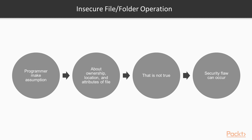Time synchronization protocols like NTP can be used to mitigate clock drift. In insecure file or folder operations, programmers often make assumptions about the ownership, location, or attributes of a file or folder that might not be true in practice. This can result in conditions where a security flaw can occur or where tampering with the system may not be detected.